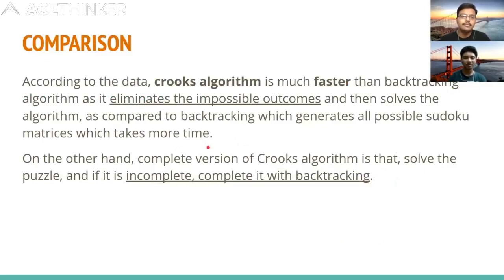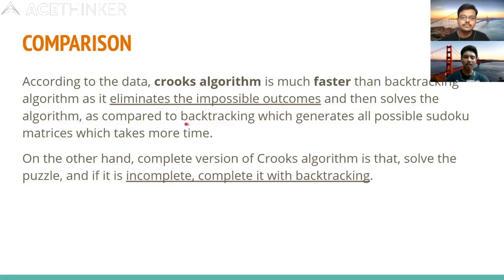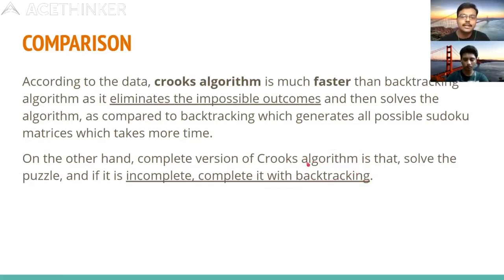Comparing both algorithms: Crooks is much faster than backtracking as it does not explore all possible outcomes but eliminates as many as possible before proceeding. However, Crooks is incomplete — it cannot always solve the Sudoku. A combined approach works best: run Crooks first to fill easy cells quickly, then hand the remaining puzzle to backtracking, which has fewer cells to explore and therefore runs faster overall.